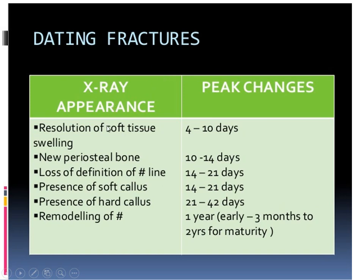Dating of the fracture is important in non-accidental injury because we often have multiple fractures of different ages. Resolution of soft tissue swelling occurs from 4 to 10 days. New periosteal bone appears at 10 to 14 days. Loss of definition of the fracture line occurs at 14 to 21 days. Soft callus is present at 2 to 3 weeks, hard callus at 21 to 42 days, and remodeling of bone takes about 1 year.